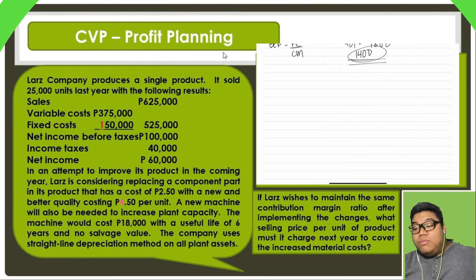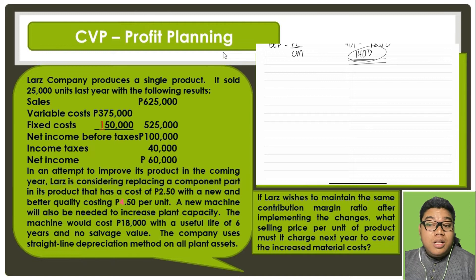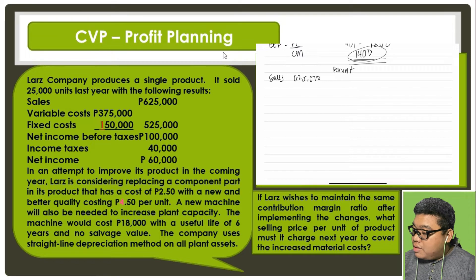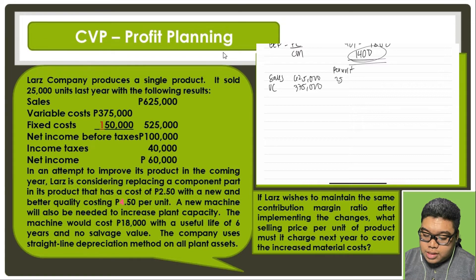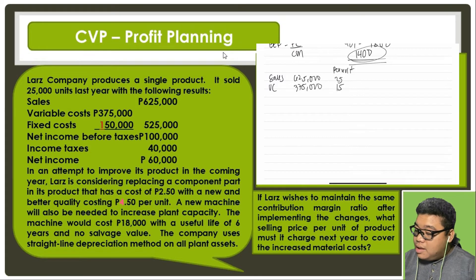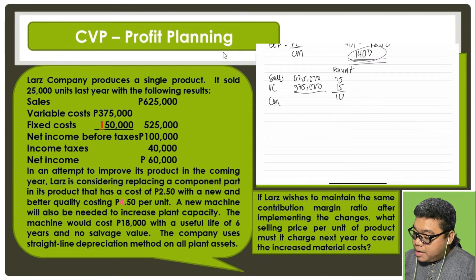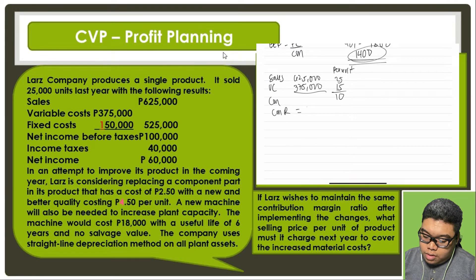To solve this, we determine the current contribution margin. Sales is 625,000, so per unit that is 625,000 divided by 25,000, which equals 25. Variable cost per unit is 375,000 divided by 25,000, which equals 15. So the contribution margin per unit is 10.